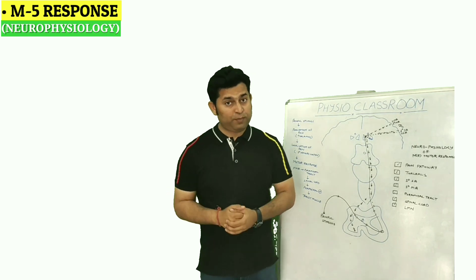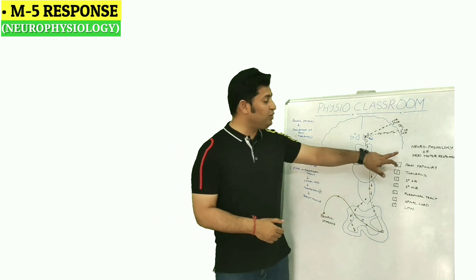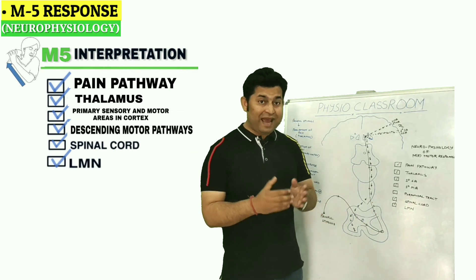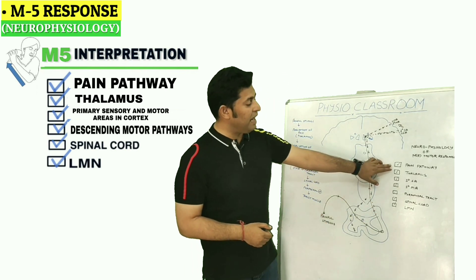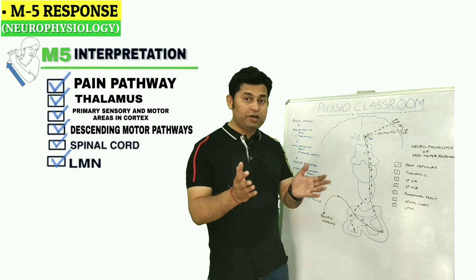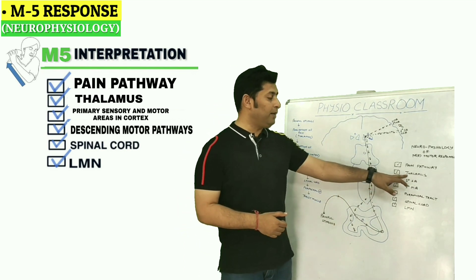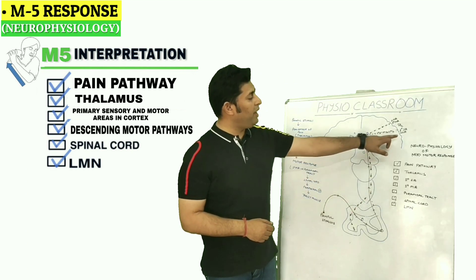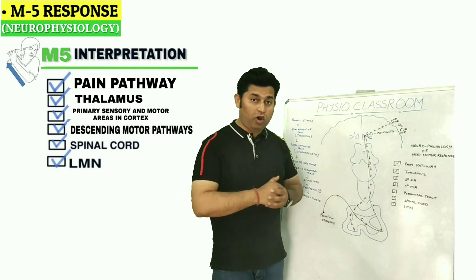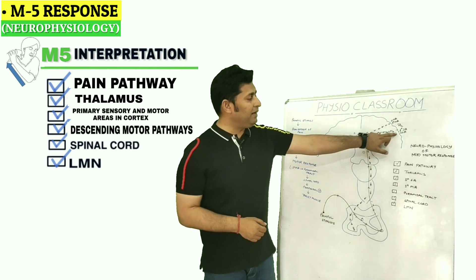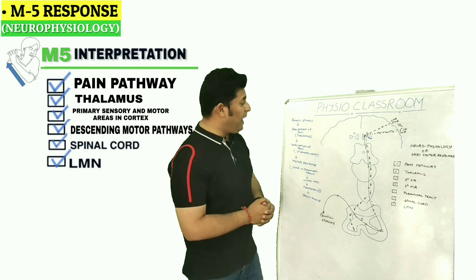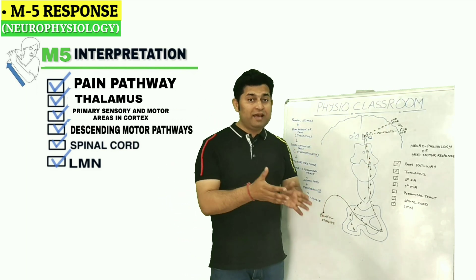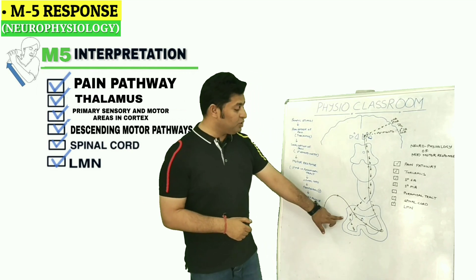This is how we can interpret the neurophysiology of the M5 motor response, checking the different components and their functions. A physiotherapist can interpret that this patient has an intact pain pathway, the thalamus is functioning normally, thalamocortical projections are also intact, and the primary sensory and motor areas — the parietal and frontal cortex — are also functioning normally.